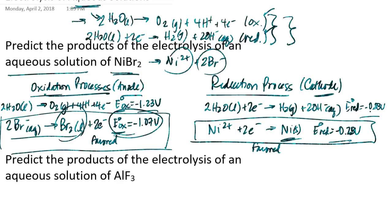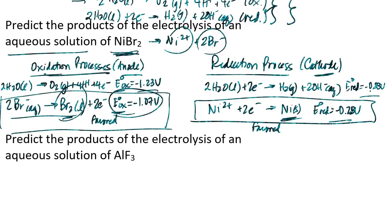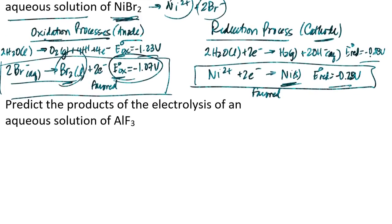As it turns out, if I wanted to actually get nickel and bromine from nickel(II) bromide, I could electrolyze the aqueous solution and it would be as effective as the electrolysis of the molten salt. But that's not always the case.